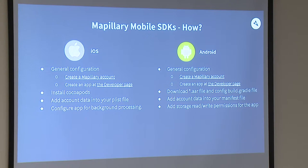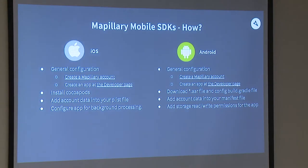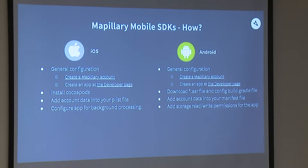We have two SDKs — one for iOS and one for Android — both built in native code, released late in 2018. This is actually the first time we're presenting them publicly, so thanks for coming. For both SDKs, first you need a general configuration: create a Mapillary user, go to our developer page, and create your own app. That generates a client ID used to authenticate your users with Mapillary when using the SDK.